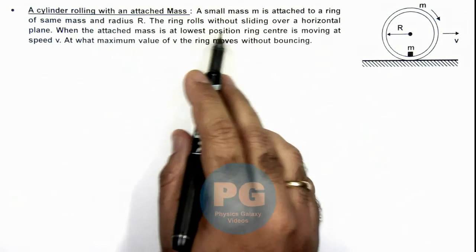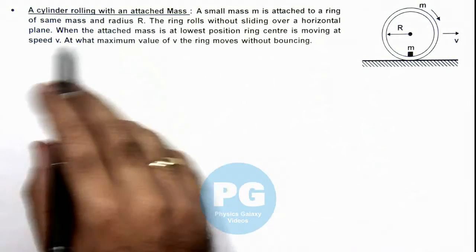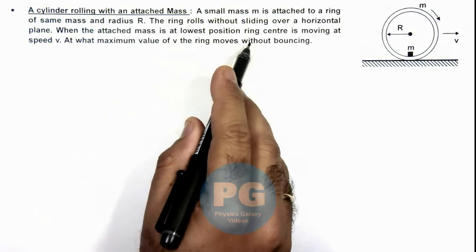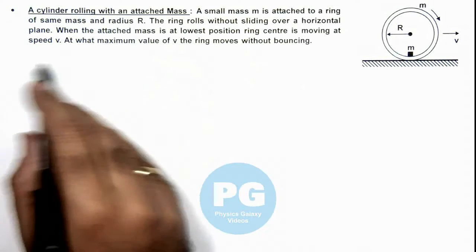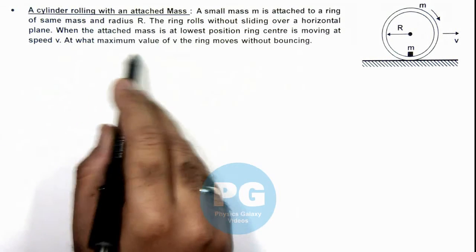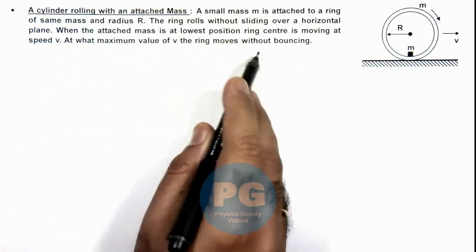The ring rolls without sliding over a horizontal plane. When the attached mass is at lowest position, ring center is moving at speed v. We are required to calculate at what maximum value of v the ring moves without bouncing.